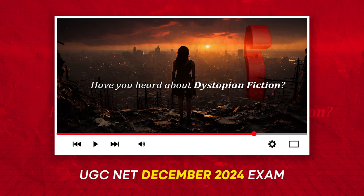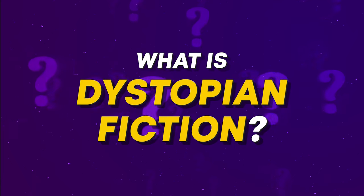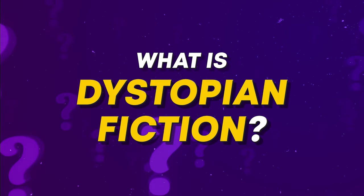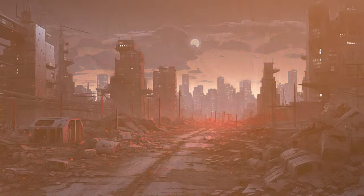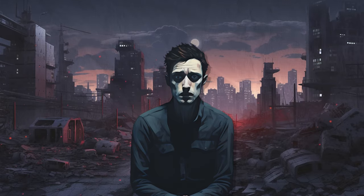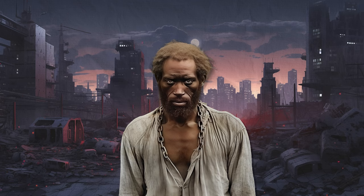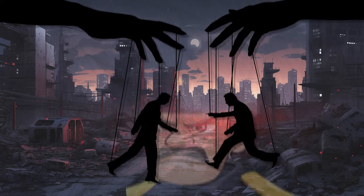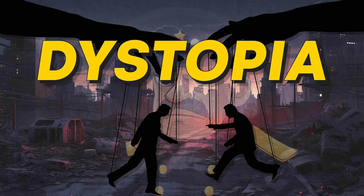Without wasting any more time, let's dive straight into the video. First of all, what is dystopian fiction? To understand that, we need to understand the meaning of dystopia. Imagine a world where everything seems to have gone wrong — a reality where individual freedoms are sacrificed for the illusion of security, where the ruling powers dictate every aspect of existence. That's what we call a dystopia.